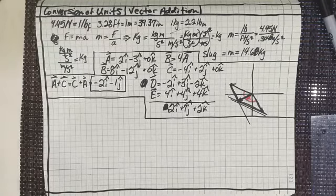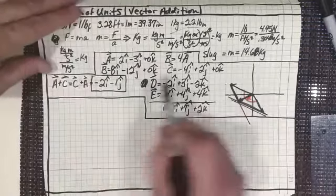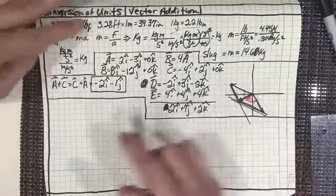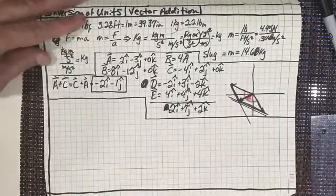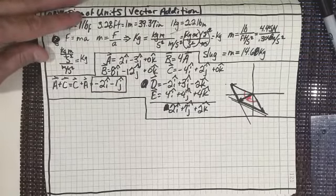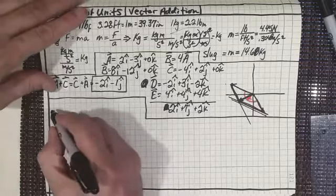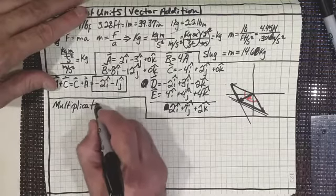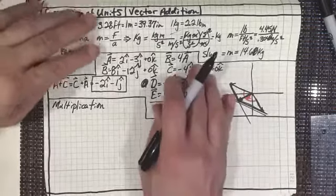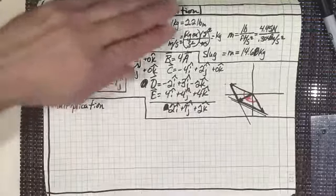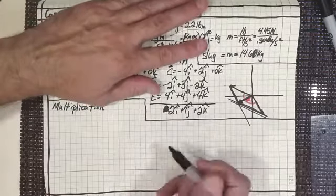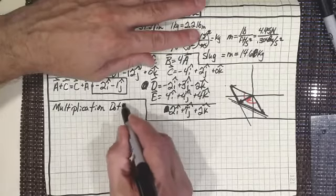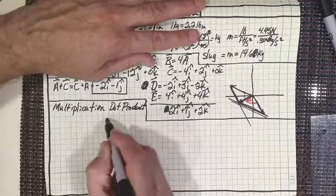Subtraction works the exact same way as addition. What I really want to get into is the multiplication of vectors. There are two different ways to multiply vectors: one is sort of along the same lines as what we've always thought of multiplication, and one is not. There is the dot product and the cross product.